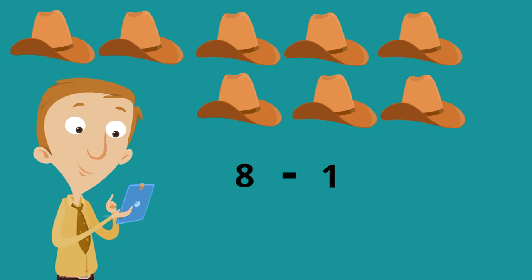Now remember, when we subtract, we're just taking numbers away. So 8 minus 1, we're gonna just take one away. There we go. How many hats do I have left? What is 8 minus 1? If it helps you can just count how many hats I have left. Yeah, seven. 8 minus 1 is 7. Now I have seven hats.